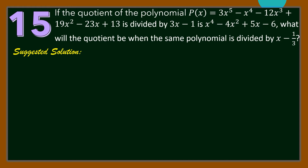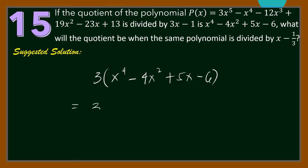Since we know that if a polynomial is divided by (ax + b) — in this case a = 3 and b = −1 — the resulting quotient must be divided by 3. And since our new divisor is now (x − 1/3), what we're going to do is multiply each term of the quotient by 3. So we have 3(x⁴ − 4x² + 5x − 6), which gives the quotient 3x⁴ − 12x² + 15x − 18.